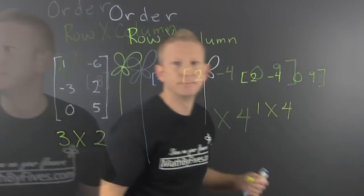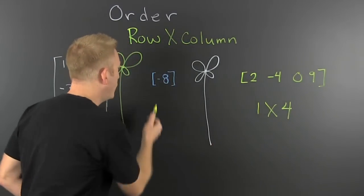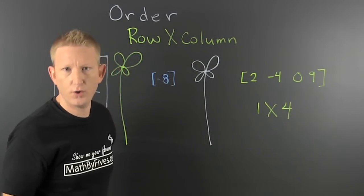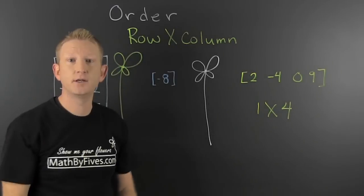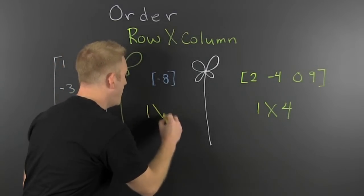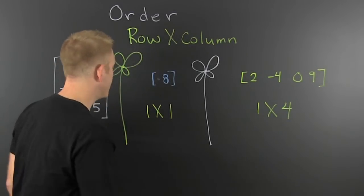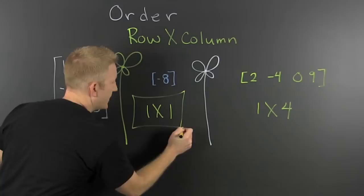What's next? Oh! This one! How many rows do you see? I see one row. How many columns? One column. So this is a one by one. And we're having some fun in the classroom.